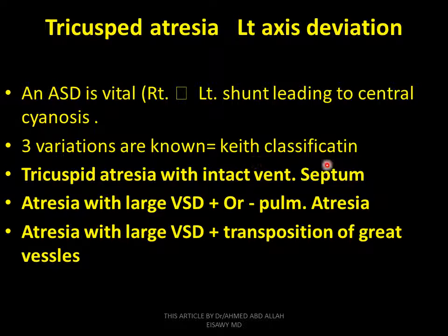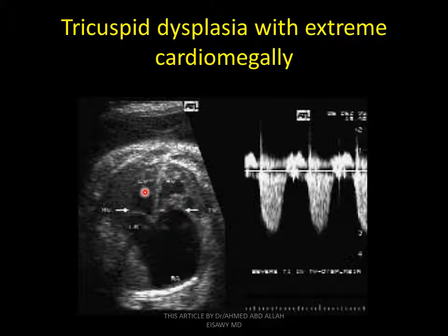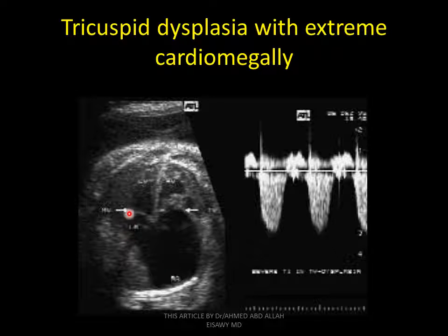Three variation classifications: tricuspid atresia with intact ventricular septum; tricuspid atresia with large VSD or pulmonary atresia; atresia with large VSD and transposition. Tricuspid dysplasia with extreme cardiomegaly — this is tricuspid dysplasia with extreme cardiomegaly. The mitral valve, left ventricle, right ventricle, and enlarged right atrium are visible. Obstruction at the tricuspid valve requires ASD for blood to exit the right atrium, going to left atrium, then to the left ventricle through the mitral valve. High velocity is seen on color Doppler study across this area.